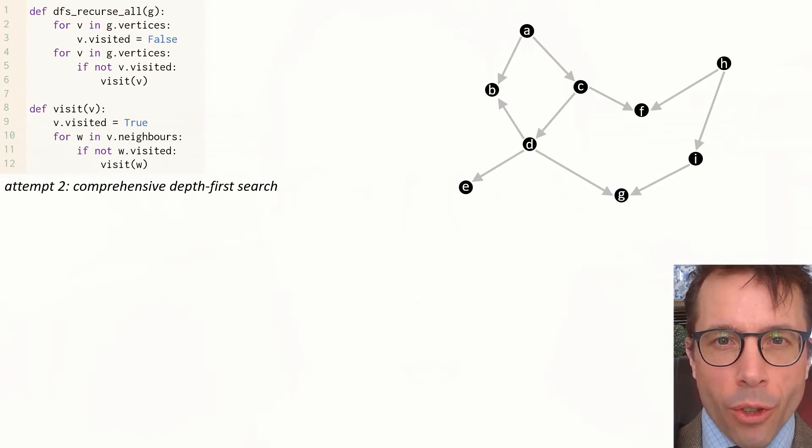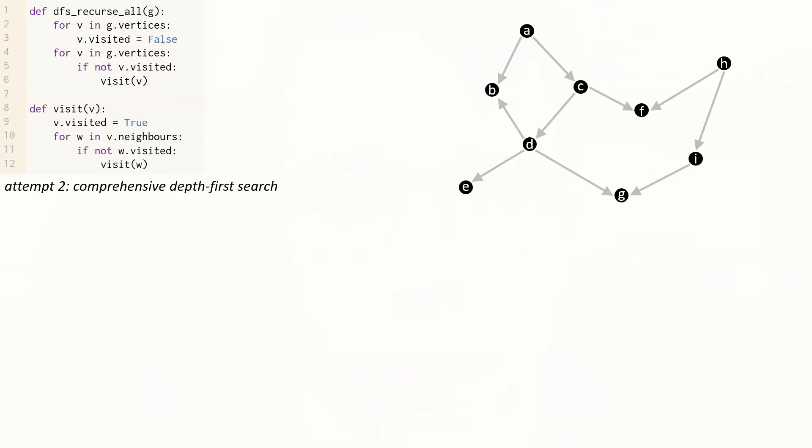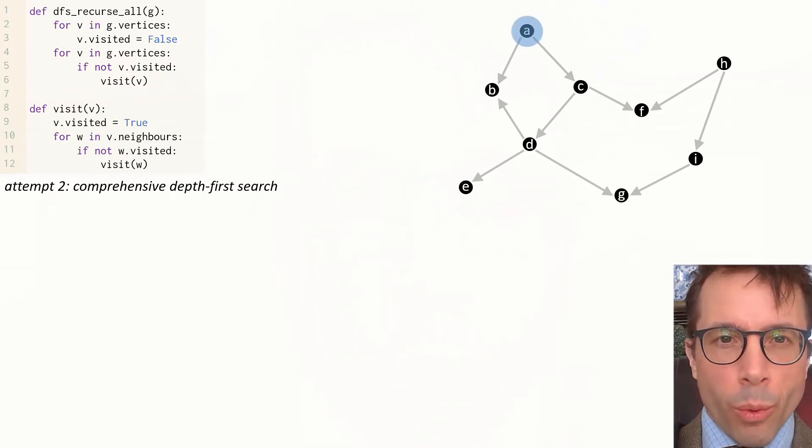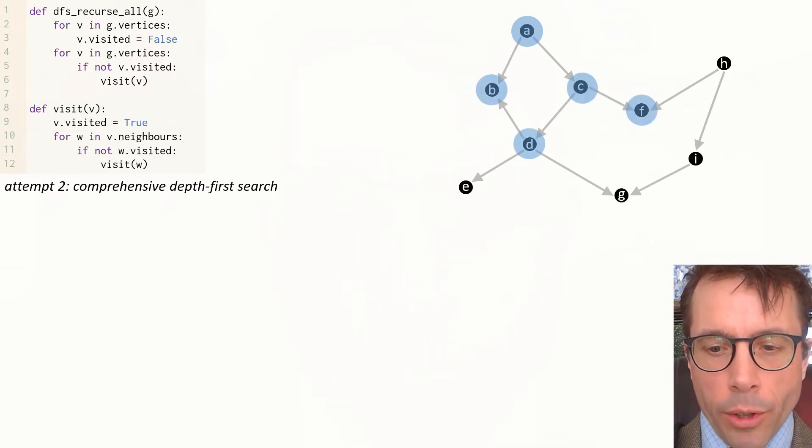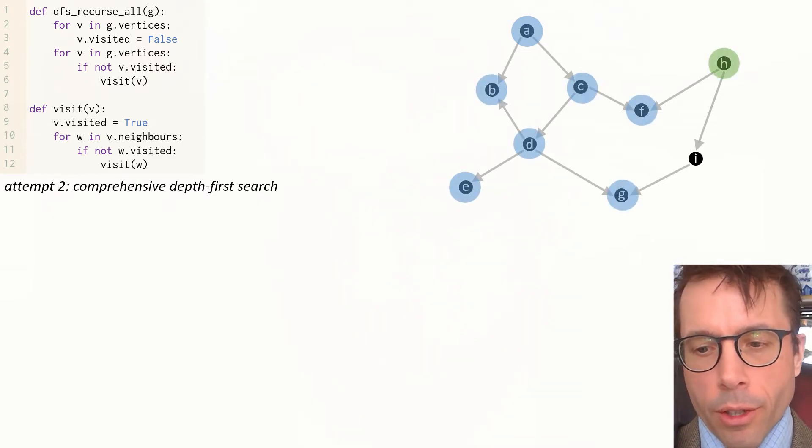We definitely have to visit all the vertices if we're going to put them in a total order, so let's try again. Here's some code that runs depth-first search more than once if needed, choosing a new start vertex each time until it has exhaustively gone through the entire graph. Press pause and have a quick read through the code. And here's an example run through: the outer function dfs_recurse_all triggers two depth-first searches, one starting at A, the other starting from H.